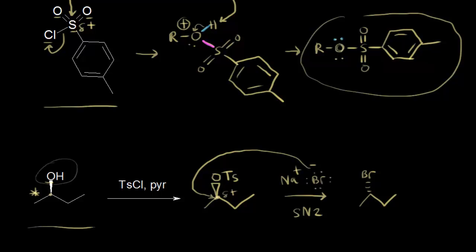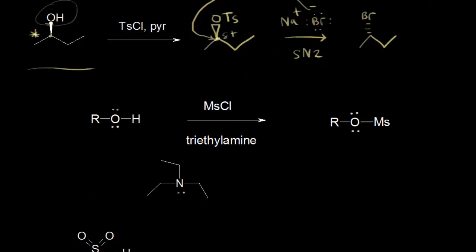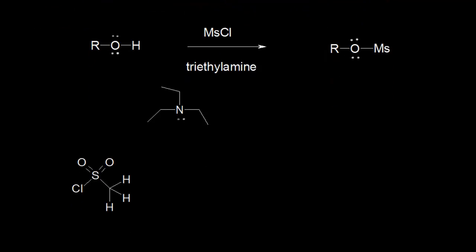We could talk about formation of another good leaving group, and that's a mesylate — very similar to a tosylate. If we look at the general reaction, once again we start with an alcohol; this time we add mesyl chloride, and this time triethylamine is the base that we will use to form our mesylate over here on the right. The mechanism is a little bit different from the formation of a tosylate, so let's go ahead and see what happens.